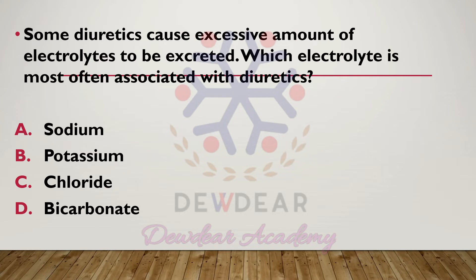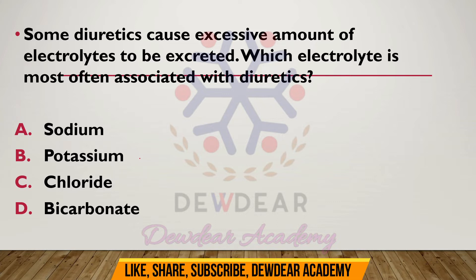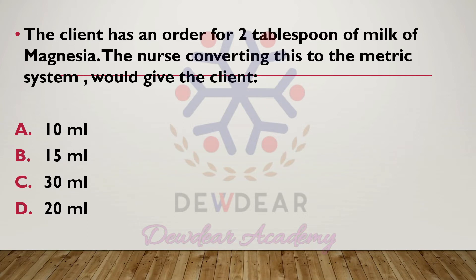Some diuretics cause excessive amounts of electrolytes to be excreted. Which electrolyte is most often associated with diuretics? Options are: sodium, potassium, chloride, bicarbonate. The correct answer is option B — potassium.